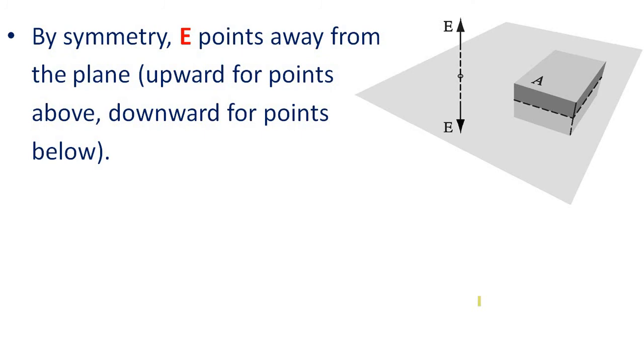Now we need to find the left side of Gauss law. Let us consider this Gaussian pillbox. The area of this surface is A and there will be one more surface on the bottom. Let us discuss the upper and lower surface. These sides we can discuss later. By symmetry electric field points vertically upward or vertically downward. So it points away from the plane, upward for the points above and downward for the points below.